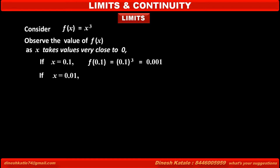Now if x = 0.01, which is very close to 0 compared to the first value 0.1, then f(0.01) = (0.01)³ = 0.000001. This value is very close to 0, which is closer to 0 compared to the first value of f(x) when x was 0.1.